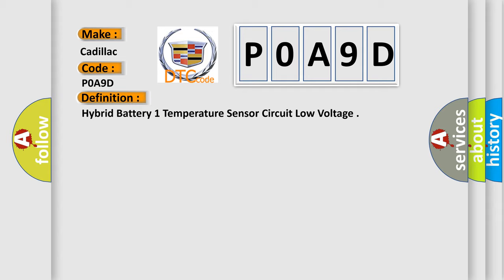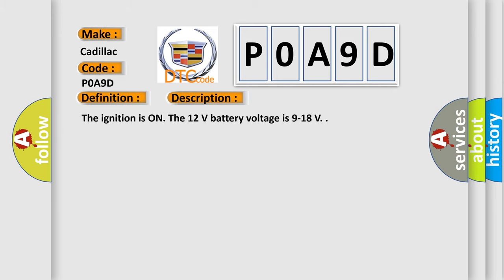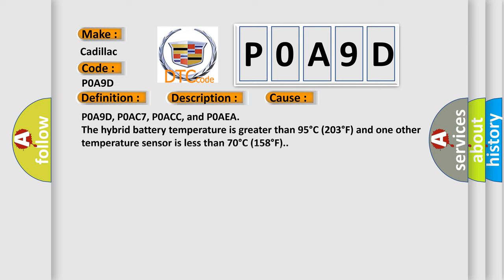And now this is a short description of this DTC code. The ignition is on, the 12-volt battery voltage is 9 to 18 volts. This diagnostic error occurs most often in these cases.